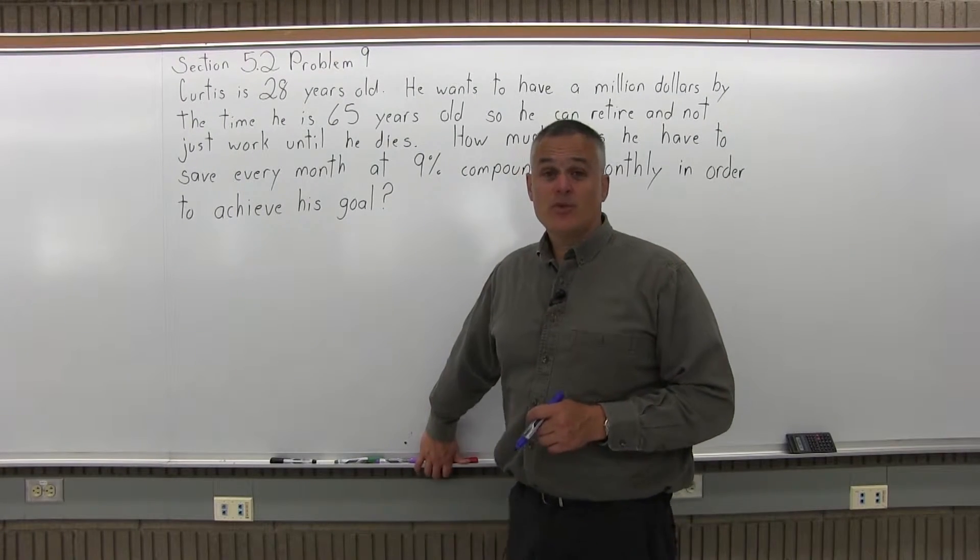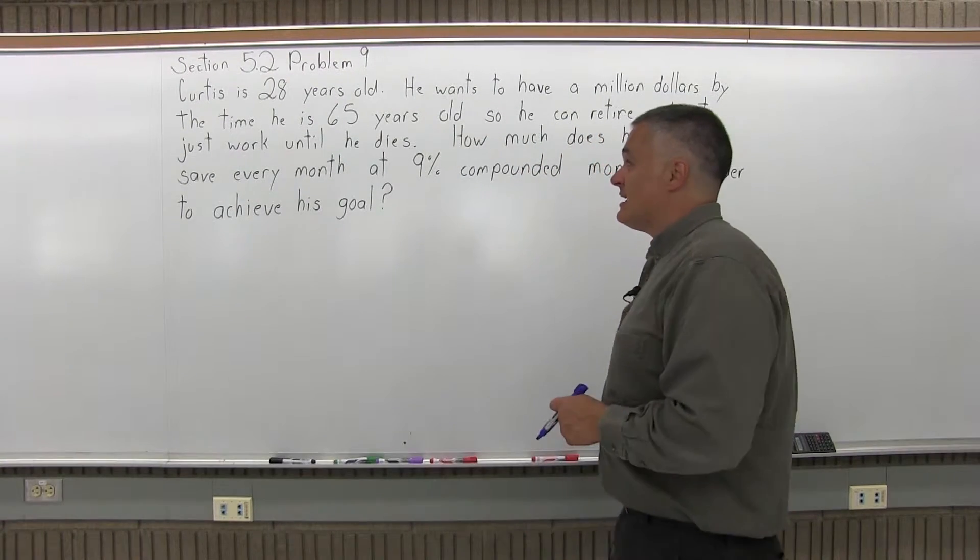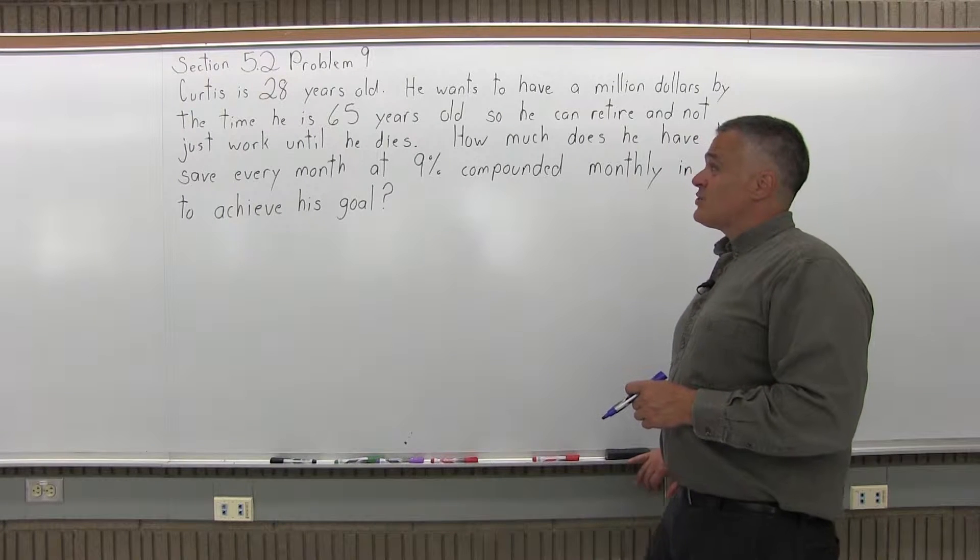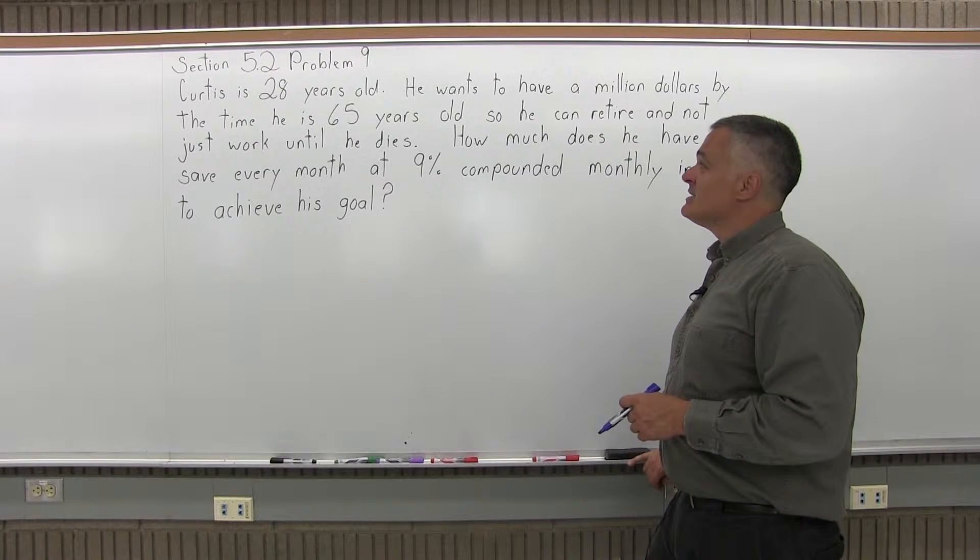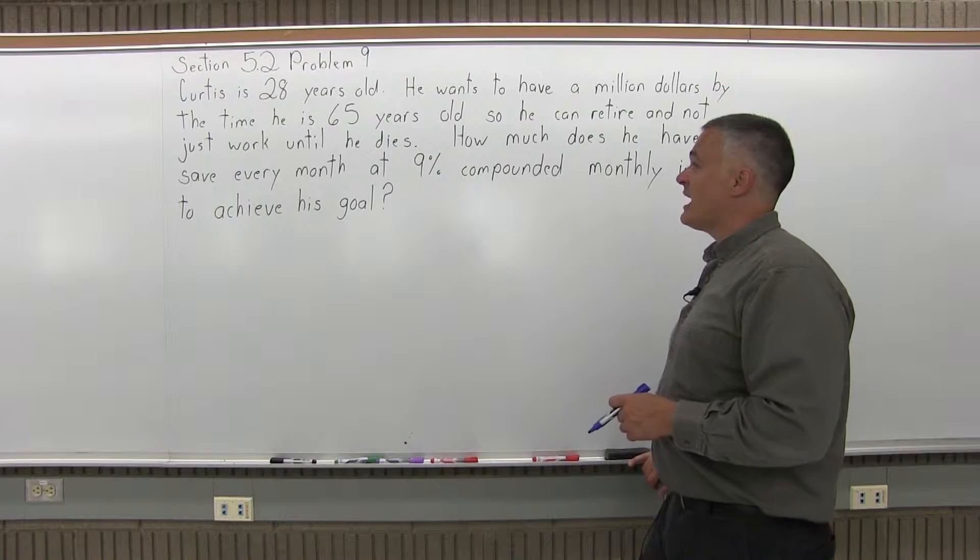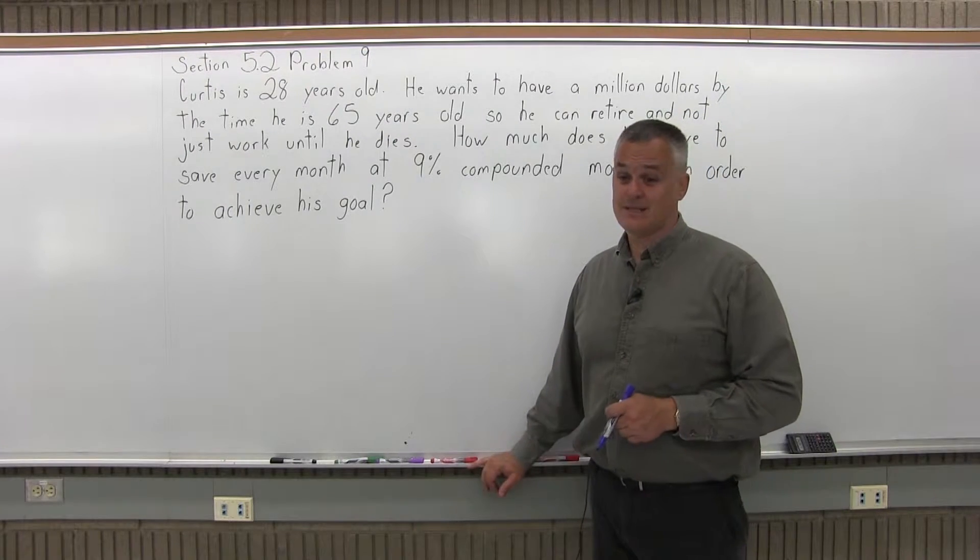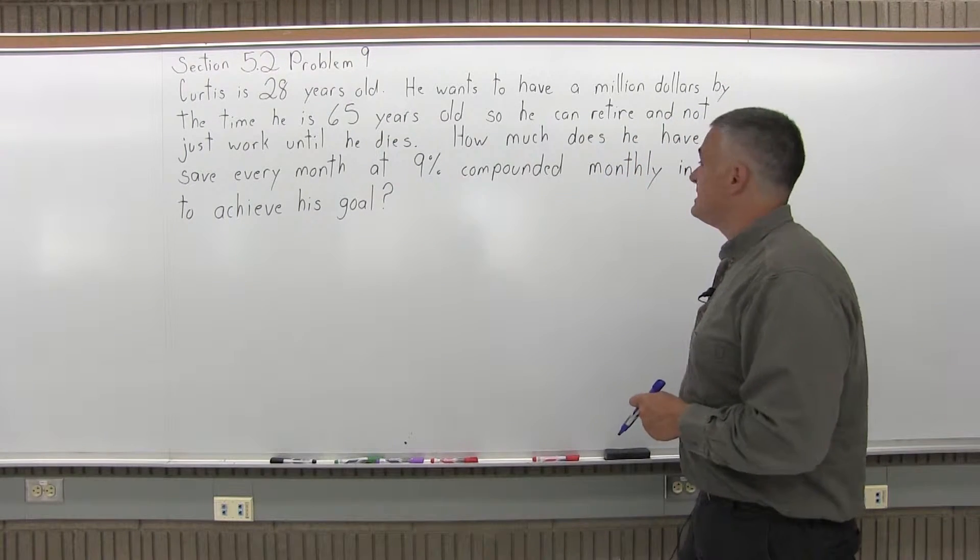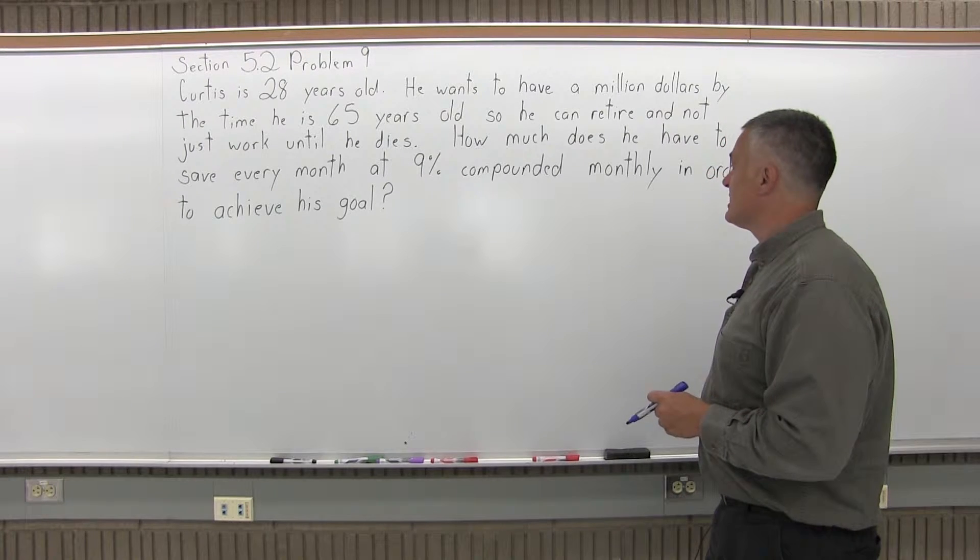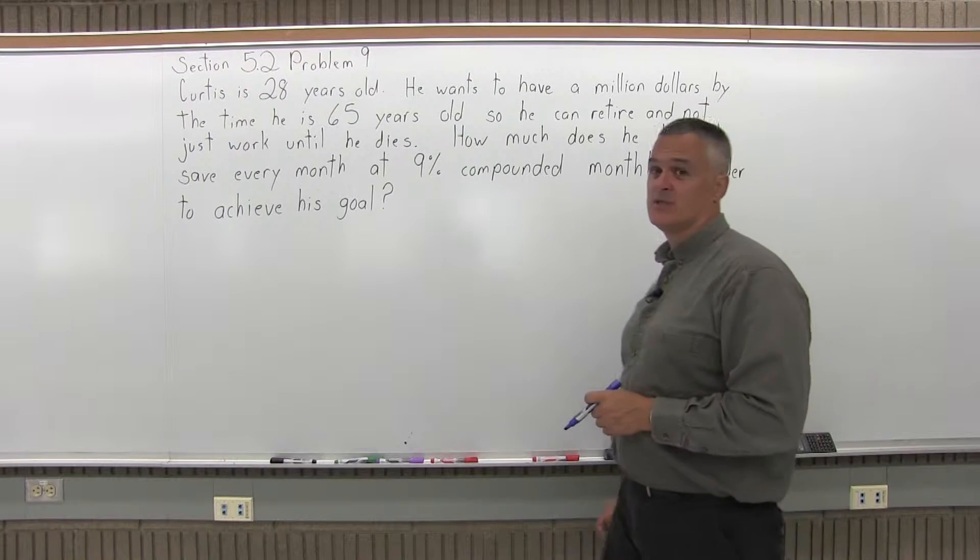This is Section 5.2, Problem 9. It says Curtis is 28 years old. He wants to have a million dollars by the time he is 65 years old so he can retire and not just work until he dies. How much does he have to save every month at 9% compounded monthly in order to achieve his goal?